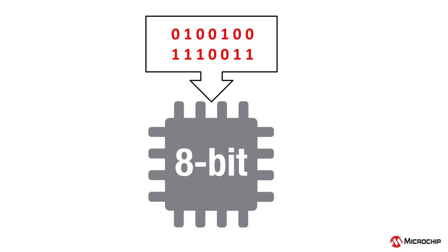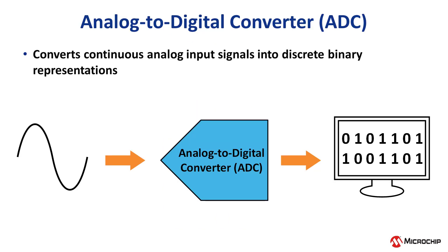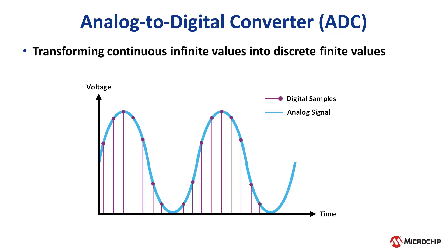Microcontrollers can only understand digital signals, so when you use analog signals — which are signals with values other than 1 or 0 — the microcontroller cannot understand them. The ADC converts continuous analog input signals into discrete binary representations. An ADC enables a digital circuit to react to real-world events such as user input devices or sensors that are not digital signals. At a basic level, an ADC will sample the analog signal and derive a digital value. Microcontrollers can approximate analog signals after doing this several times very quickly.